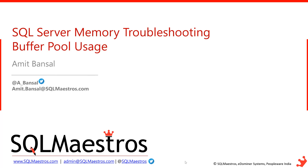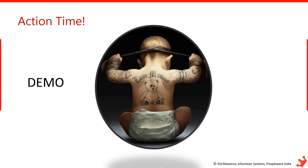Let's understand the concept of buffer pool usage and how you can break down that memory. First, we'll look at overall server memory consumption, then find which component is consuming the most, and then break down buffer pool memory by database and by object — finding which database and which object inside that database is consuming the maximum amount of memory.